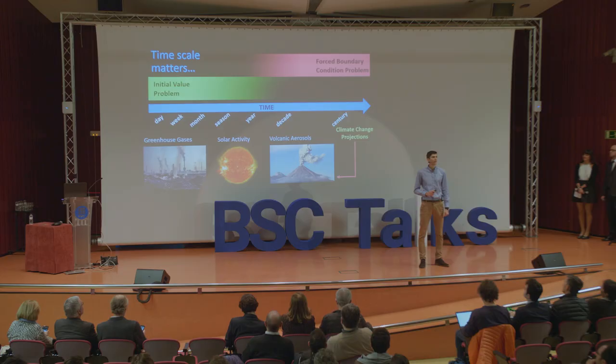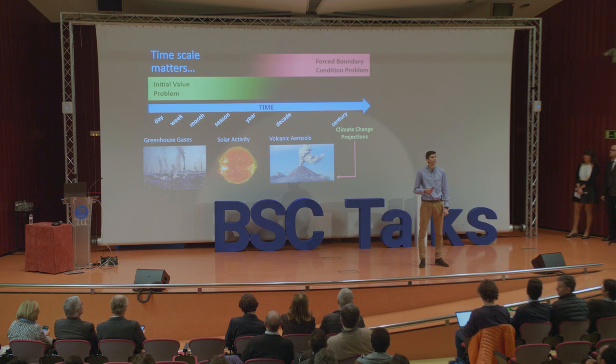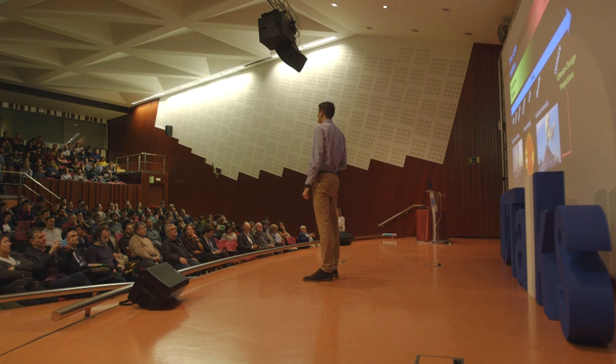On the totally other side of the time scale, we have climate projections. Climate change projections can be seen as a good example of second kind predictability — it is a boundary condition prediction problem where a climatologist tries to understand how the statistics of the climate change between two different sets of boundary conditions.